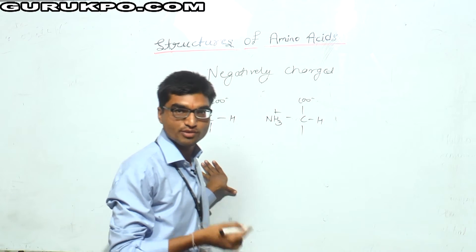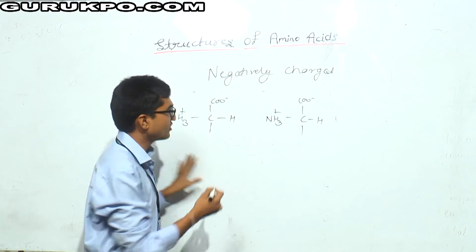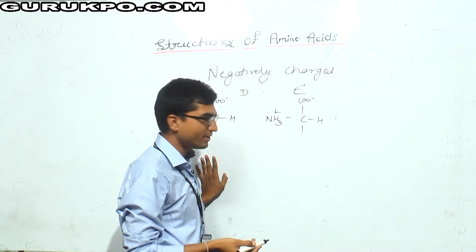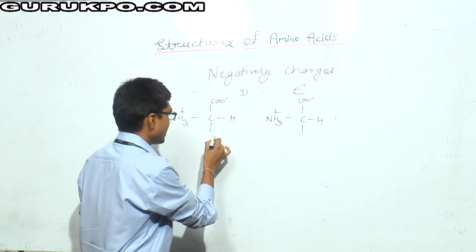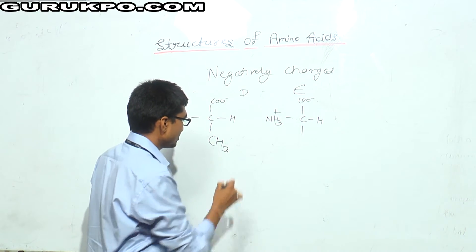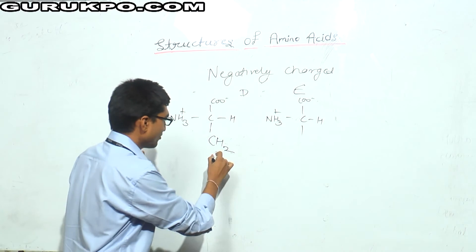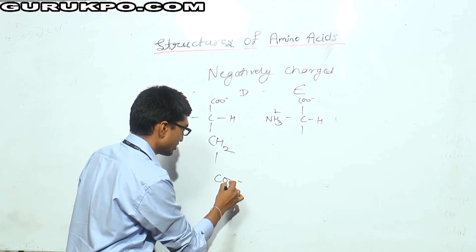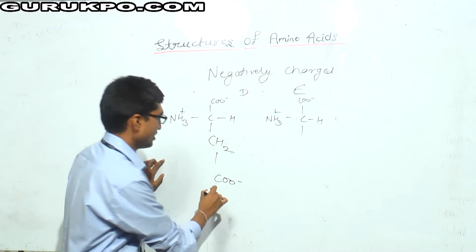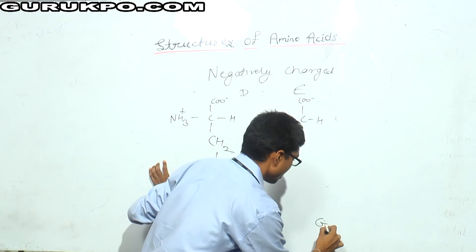Now we are going to discuss about the negatively charged amino acids. Negatively charged amino acids can also be formed from alanine. There are two negatively charged amino acids: D and E, that is aspartate and glutamate. The structure of aspartate is formed from alanine by replacing one H with a COO⁻ group. This negative COO⁻ group provides the negative charge to aspartate.